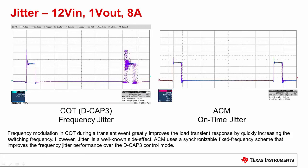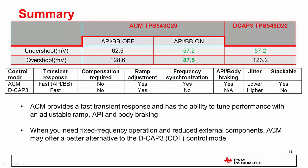ACM uses a clock-synchronizable fixed frequency scheme that improves the frequency jitter performance over the DCAP-3 COT control mode. As can be seen, internally compensated advanced current mode control with asynchronous pulse injection and body break offers as good or better transient performance as compared with COT. Furthermore, with frequency synchronization, internally compensated ACM also reduces jitter and facilitates stackability for higher power point of load. In summary, when you need fixed frequency operation and reduced external components, internally compensated advanced current mode control may offer a better alternative to the COT DCAP-3.